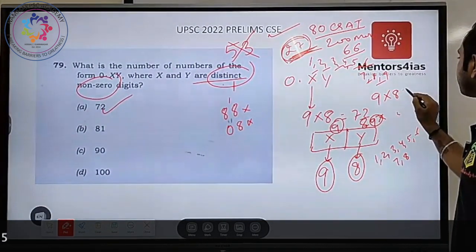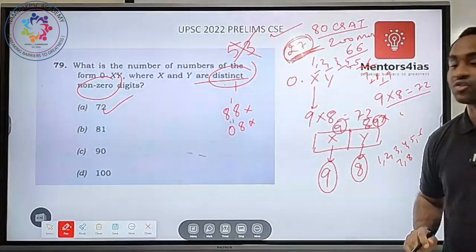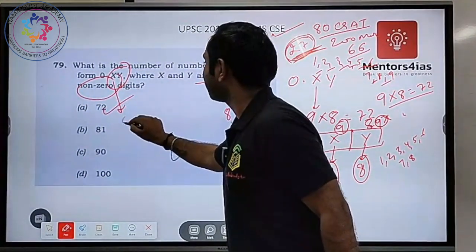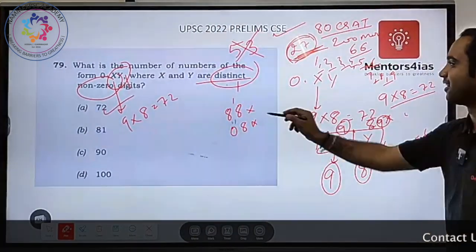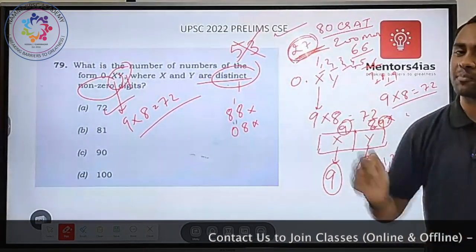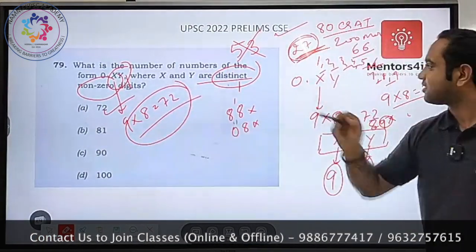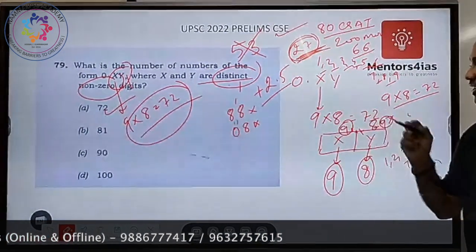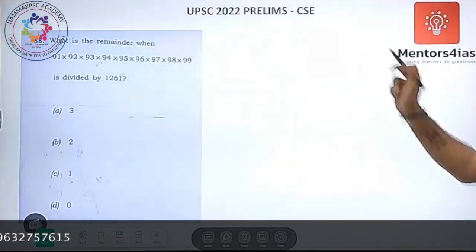So 9 × 8 = 72. Using permutation logic: x has 9 choices, y has 8 choices, giving 72 total numbers. If you've worked on your basics, you can directly see x = 9 choices, y = 8 choices, answer is 72 — done in 30 seconds. Each correct answer awards 2.5 marks.